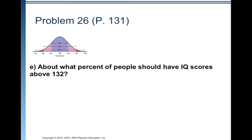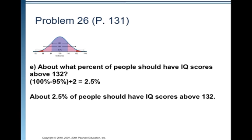About what percent of people should have IQ scores above 132? 100 percent minus 95 percent is 5 percent divided by 2 is 2.5 percent. So about 2.5 percent of people should have IQ scores above 132.